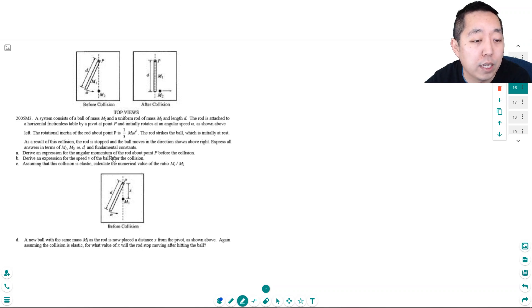Derive an expression for the angular momentum of the rod about point p before the collision. So this thing is initially rotating, and angular momentum is always equal to i omega. They tell us what the i of this rotating object is, the rotational inertia. It's one-third m1 d squared. And they give you omega, so that's it. So it's just i times omega. This one's pretty straightforward.